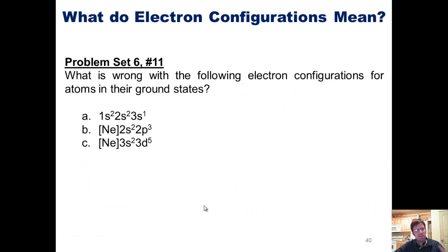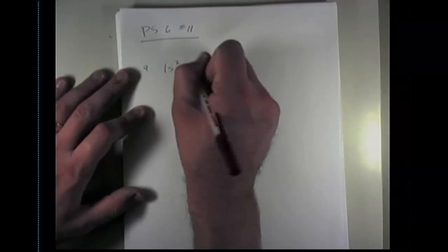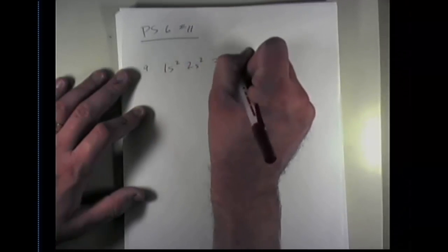We'll now finish with one final problem, question number 11 from problem set 6. I want you guys to figure out what is wrong with the following electron configurations for atoms and their ground states. As I've done before, I will be sharing the answers with you, but you're welcome to pause it first and try these on your own before you have me go ahead and dictate the answers to you. As I've done in the past as well, I won't show you all the answers, but just a few, with the hope of getting you started and letting you do the rest on your own. What is wrong with the electron configurations for atoms in their ground states? So question A says 1s2, 2s2, 3s1.